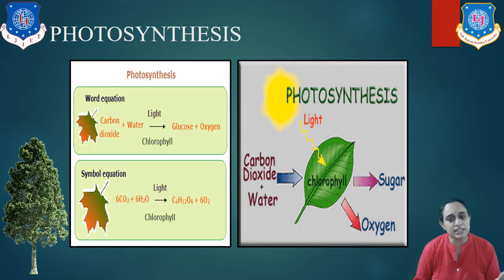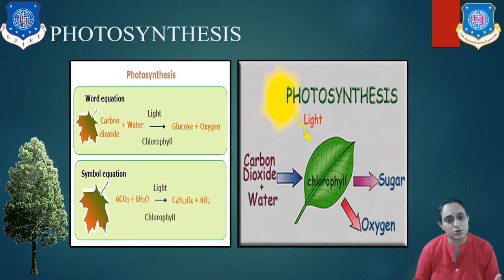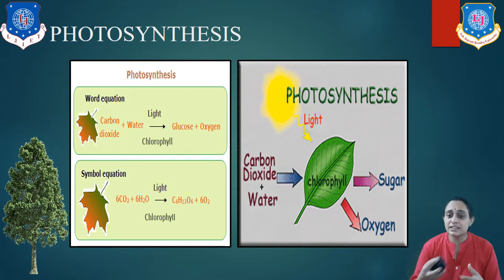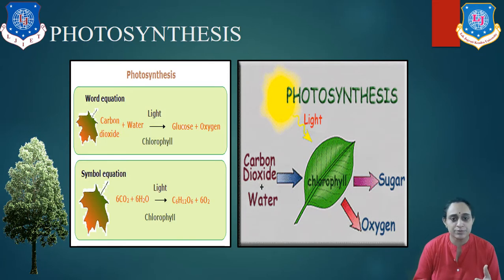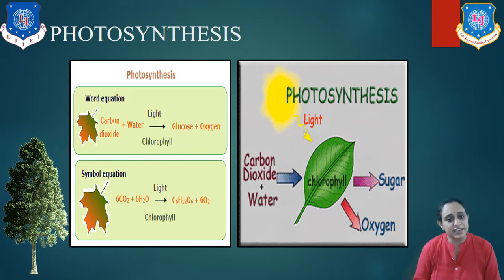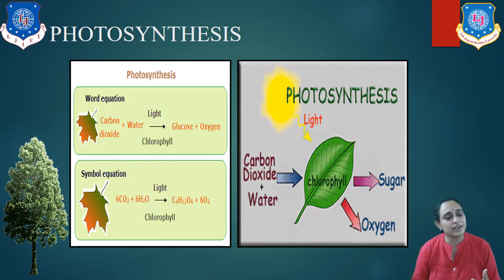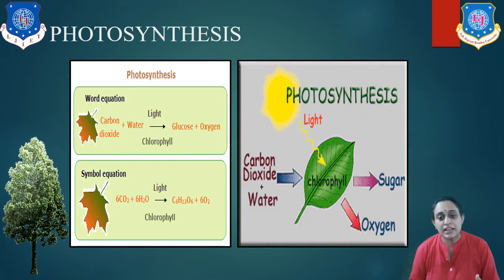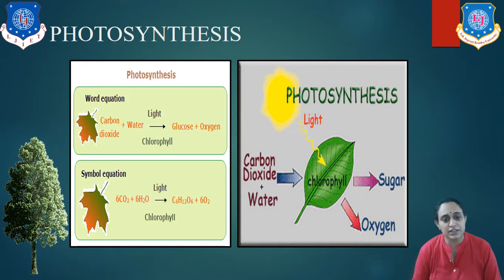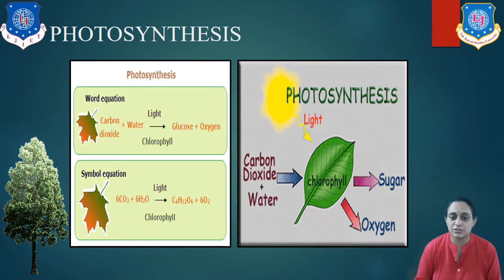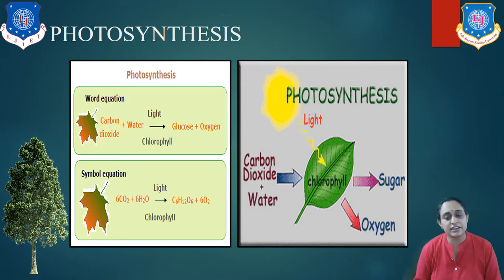You can see the photosynthesis chemical process in this diagram. In this process, carbon dioxide reacts with water in the presence of light, and it creates glucose and oxygen. It has two types of reactions: light reaction and dark reaction, which we will study in the coming slides.